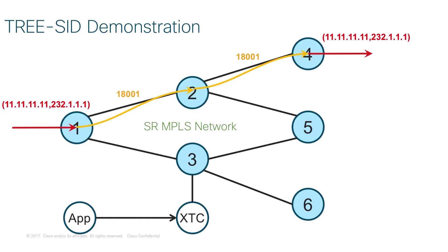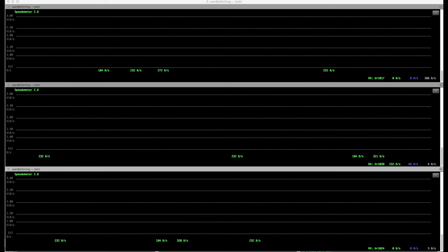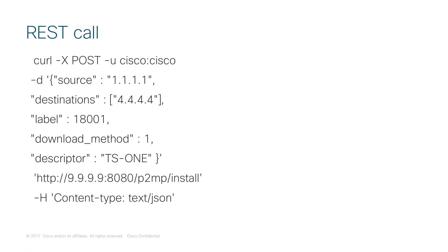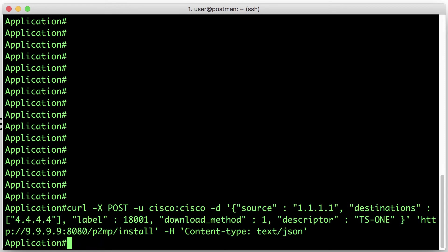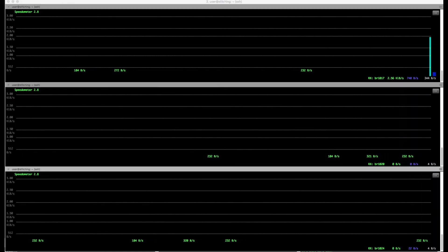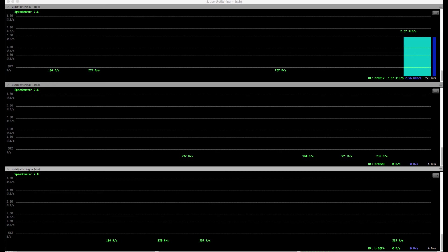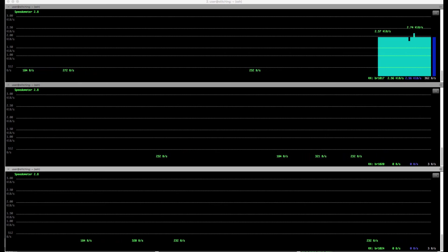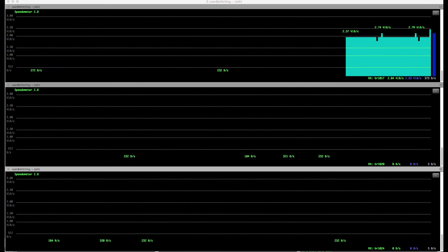In our demonstration, we have a multicast source behind router 1. First, we tried to establish a very simple tree through the network from node 1 towards node 4. In those three windows, we are detecting multicast traffic flowing out from routers 4, 5, and 6. This is the format of the RESTful API call provided by the application to the controller. The source node is node 1 and destination is node 4, and the label used here is 18001. Let's send this API call to the XTC. We can see that multicast traffic is flowing through the network. In this scenario, there is no multicast replication in the SR network.